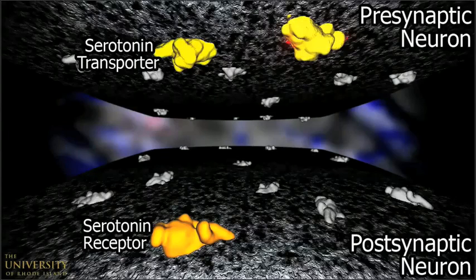This scene shows a presynaptic neuron on top, a postsynaptic neuron below, and the gap of synaptic space in between. The three proteins essential to serotonin's mechanism are shown in yellow, while the neuron's other proteins are rendered less prominently.